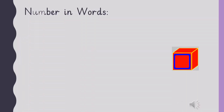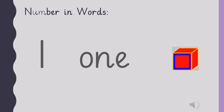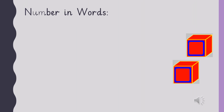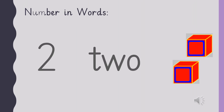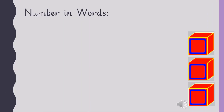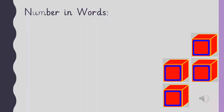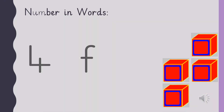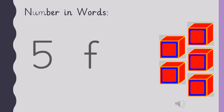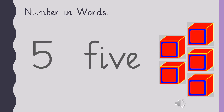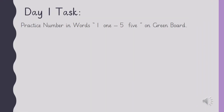We have learnt numbers and numbers in words. Now let's repeat them together. Are you ready? Number One — O N E — One. Number Two — T W O — Two. Number Three — T H R E E — Three. Number Four — F O U R — Four. Number Five — F I V E — Five.